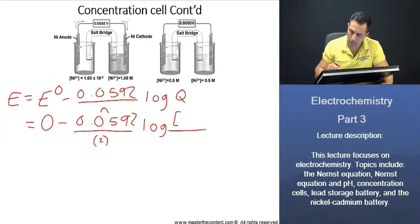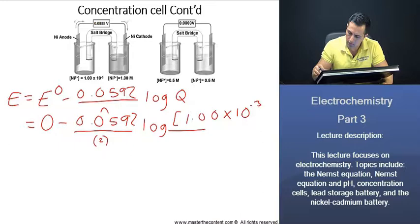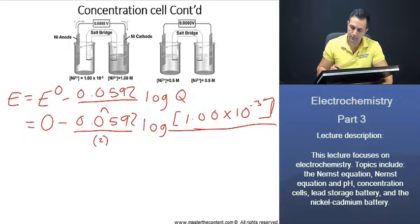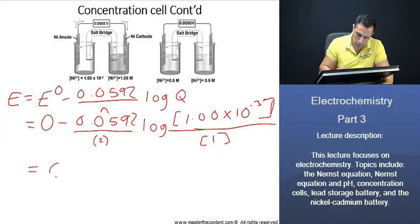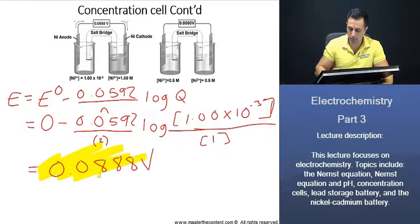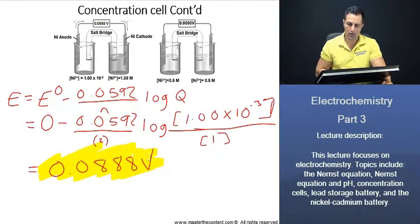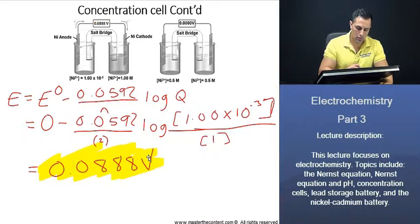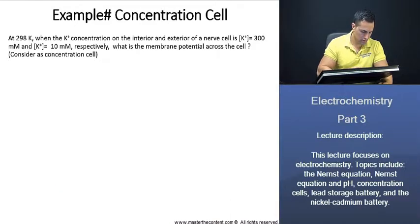And what about our concentration here? It's going to be 1.00 times 10 to the power of negative 3. It's the lesser concentration. And that is just going to be over 1. When you go ahead and you equate this, you will get a value of 0.0888 volts. And that is what our reading shows. Now let's move on to our next slide. Now we're going to be taking a look at...